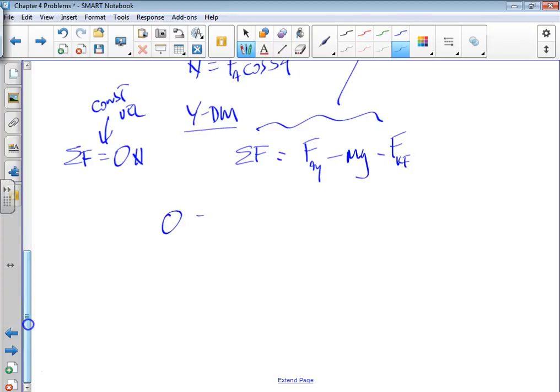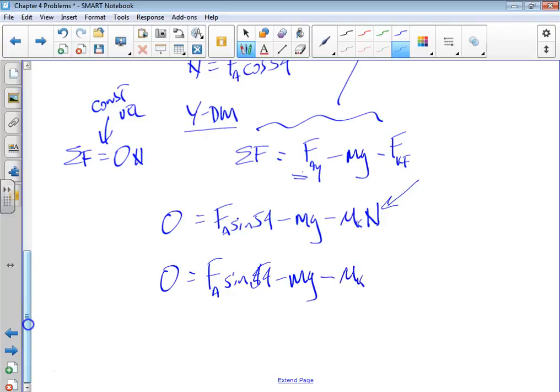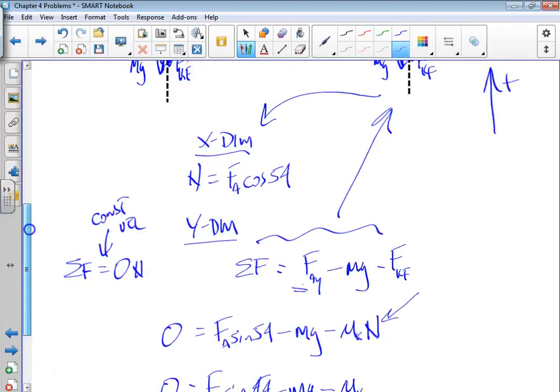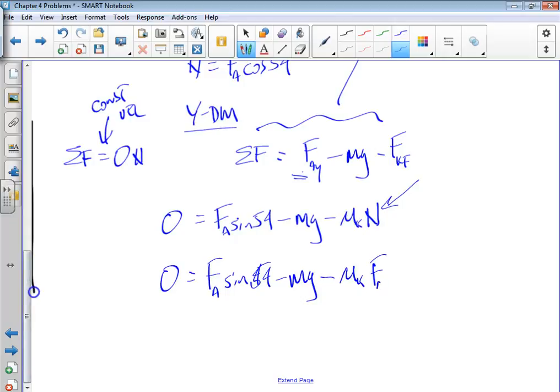So I get this expression straight from my component diagram. That's why I need the component diagram. I know that zero equals applied force in the y, which is F_a sine of 54 degrees, minus mg minus kinetic friction, which is mu kinetic times normal force. Let's expand that normal force. That means this is F_a sine 54 minus mg minus mu kinetic times—now the normal force is just F_a cosine of 54.